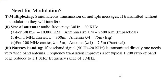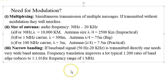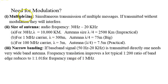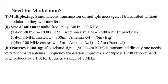Now we look at the need for modulation. The first reason is multiplexing — where you want to simultaneously transmit multiple messages. If done without modulation at the baseband signal level, all signals will mix up and you will not be able to transmit so many signals at baseband. So multiplexing is an essential part, and for multiplexing you need modulation.